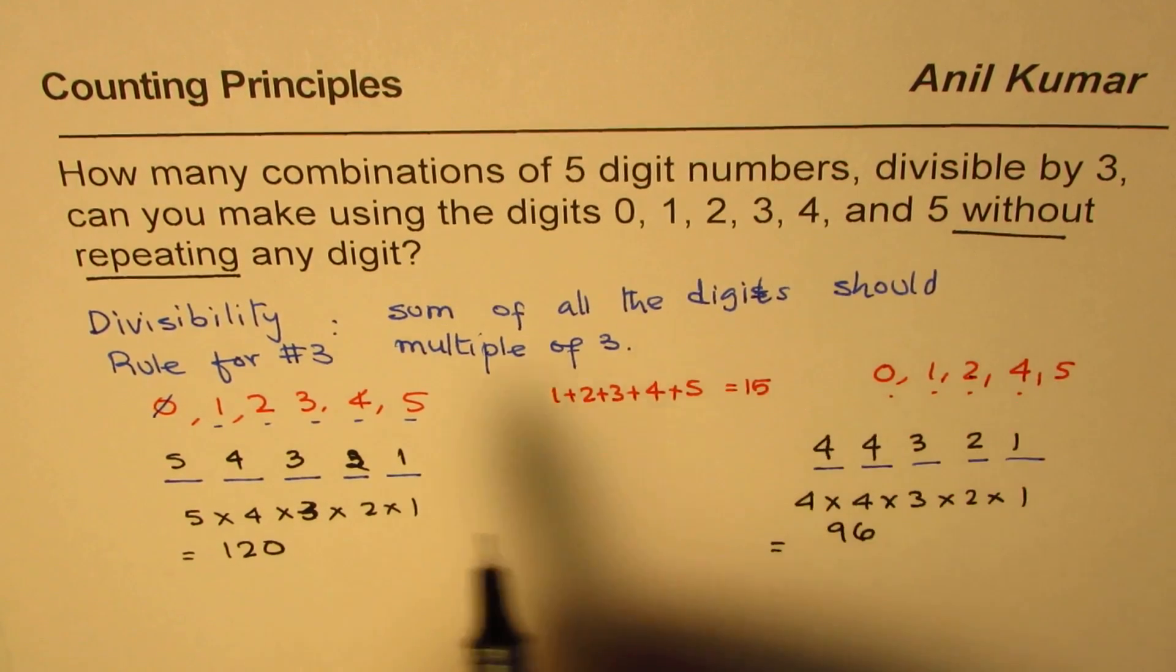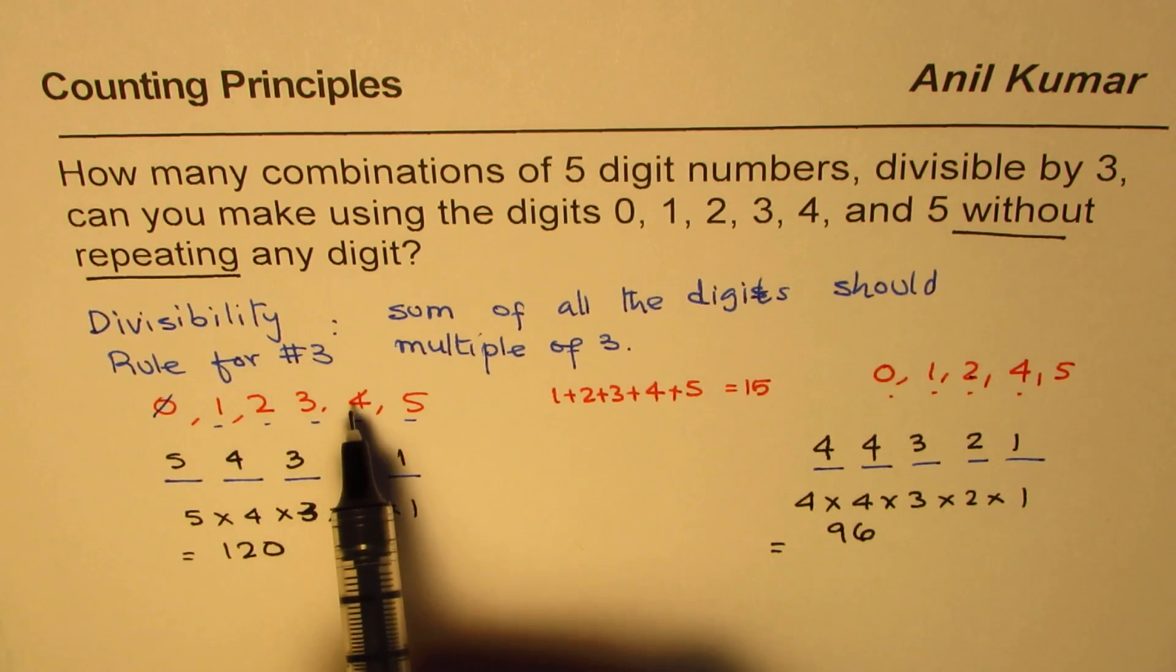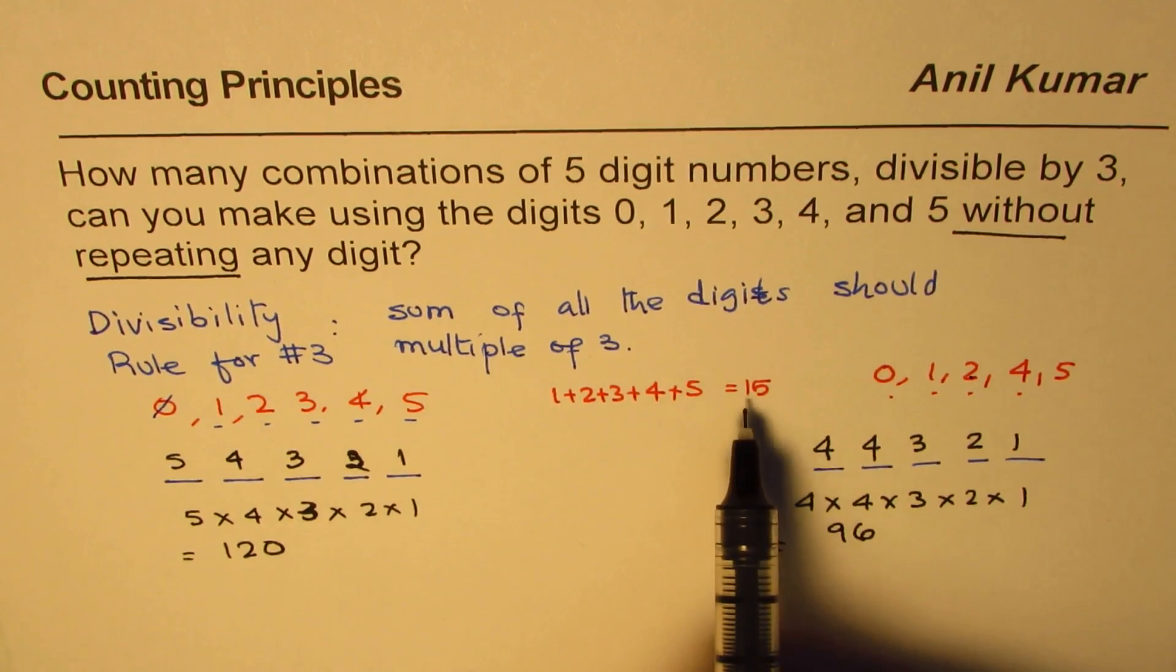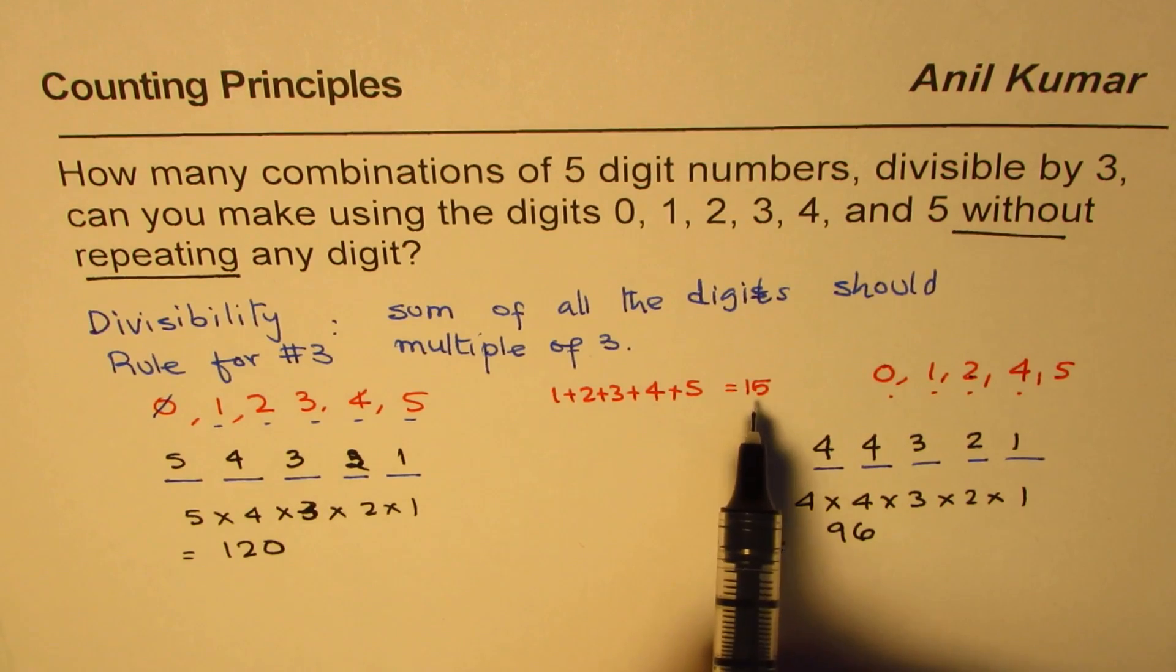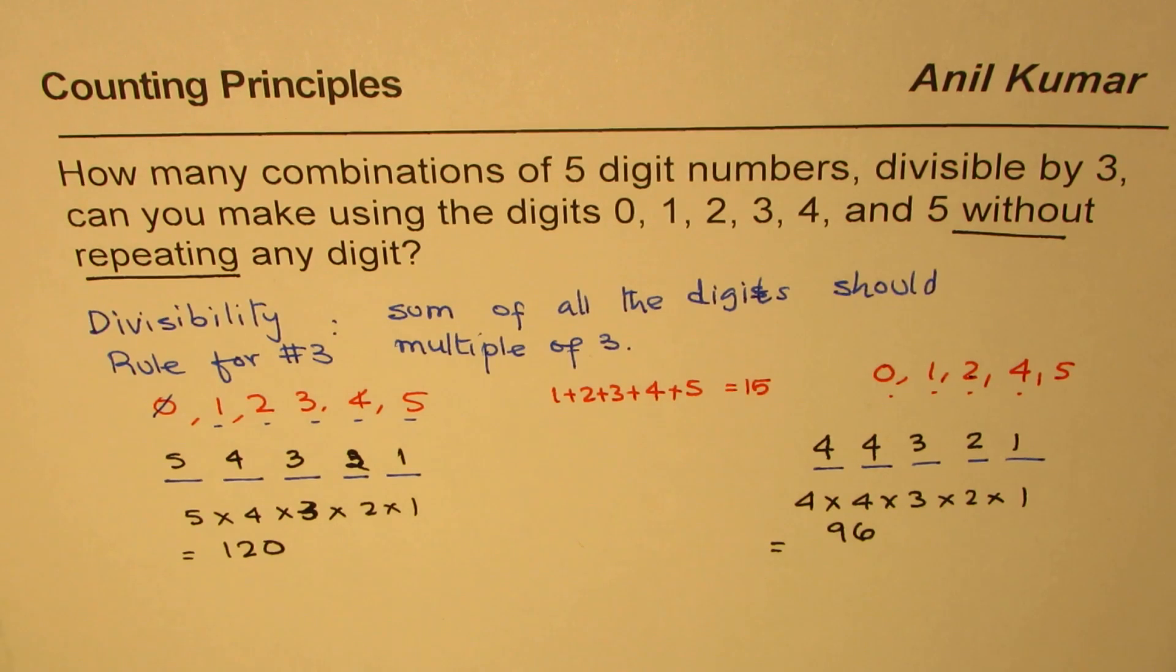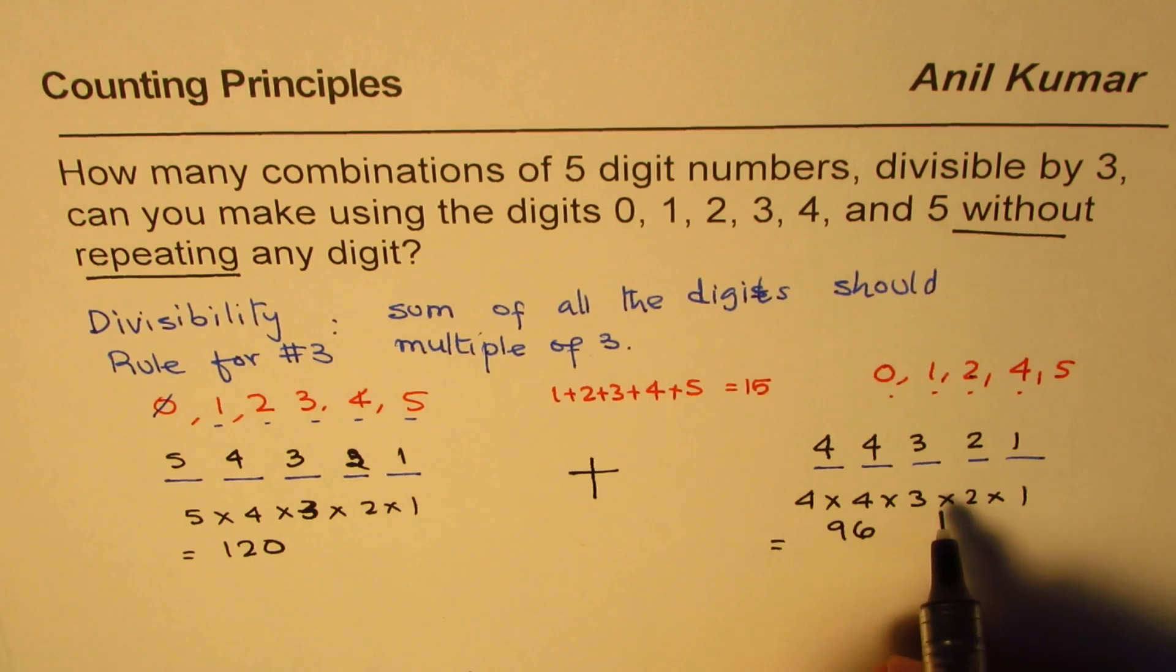Now, can you make a five-digit multiple of three by taking away four or five? The answer is no, since if I take away four from 15, I am left with 11. And if I take away five, I am left with 10 as sum of the digits. And 10 and 11 are not the multiples of three. So, these are the two ways we can do it. And those two ways, let's add them both.